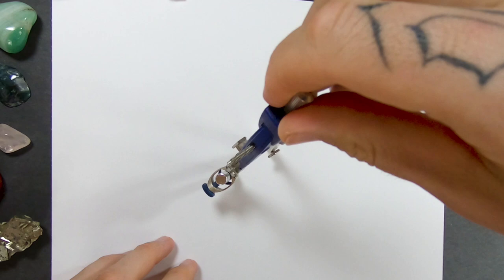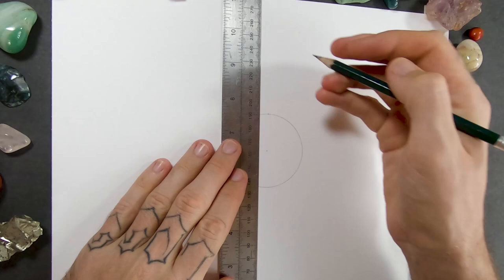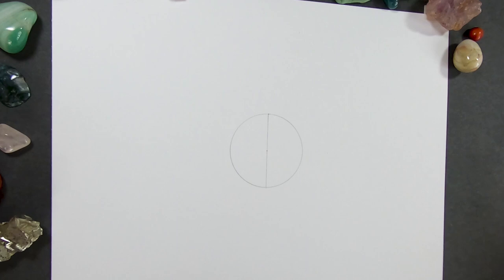So I'm going to start off with a circle. Next, I'm going to draw a line straight through the middle of the circle. Now I'll use the points where the line crosses the circle to draw two more circles the same size as the first.